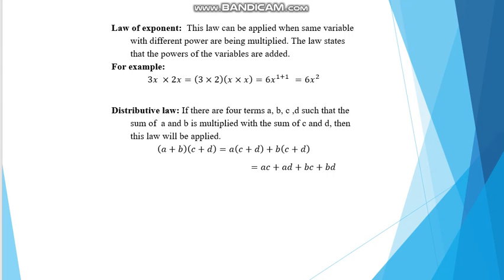The law of exponents is applied when the same variables with different powers are being multiplied. The law states that the powers of the variables are added. Taking the same example: 3x × 2x, we get 6 times x raised to the power of x¹ × x¹, which gives a total power of 2, so the answer is 6x².